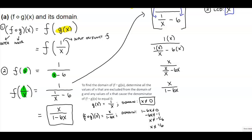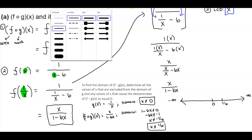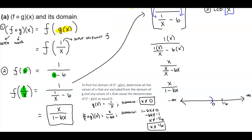For the domain of f composite g of x, which is x over 1 minus 6x, we need the denominator 1 minus 6x to not equal 0. Solving: subtract 1 from both sides to get negative 6x equals negative 1, then divide by negative 6, giving x cannot equal 1 over 6. So x cannot equal 0 and x cannot equal 1 over 6.